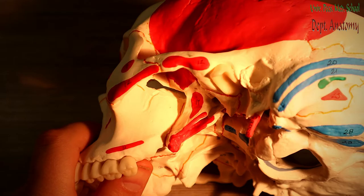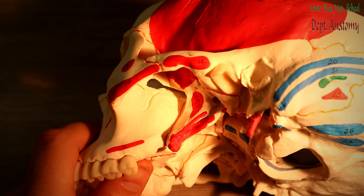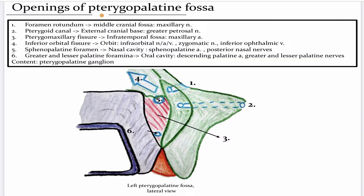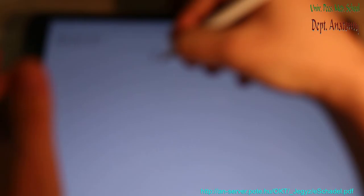In order to demonstrate the inlets and outlets of the Pterygopalatine fossa, I will make a small drawing about the openings. At the end of this video I will show you these things in the skull. If you already use the metro lines in Budapest, you have to change at Deák Square, and the Pterygopalatine fossa is like Deák Square. So — Pterygopalatine fossa.